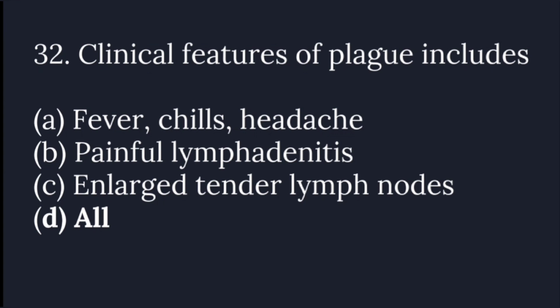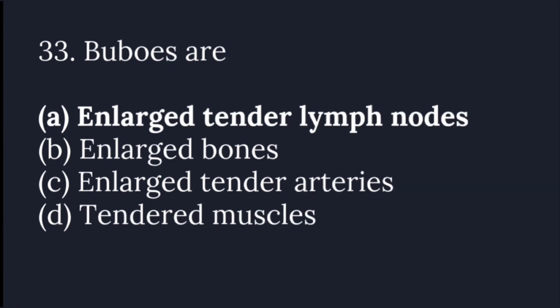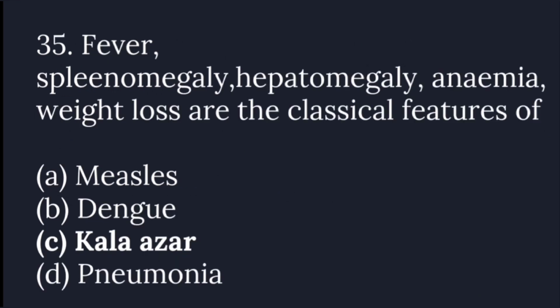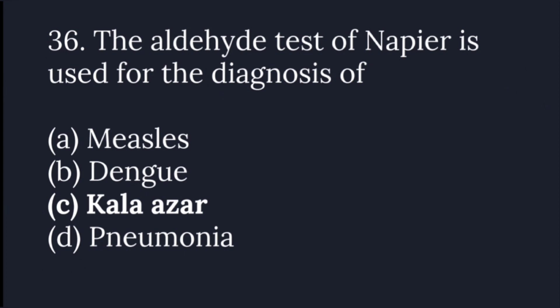Clinical features of plague include fever, chills, headache, painful lymphadenitis, and enlarged lymph nodes — the answer is all of the above. Kala azar is transmitted by the bite of a sandfly. Fever, splenomegaly, hepatomegaly, anemia, and weight loss are the classical features of Kala azar. The aldehyde test of Napier is used for the diagnosis of Kala azar.